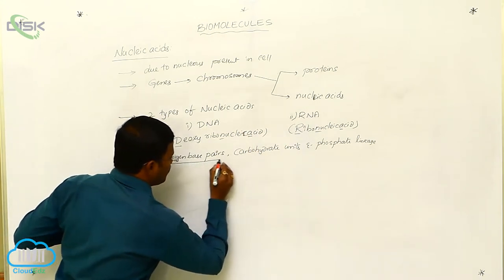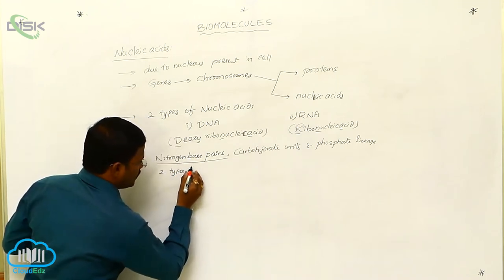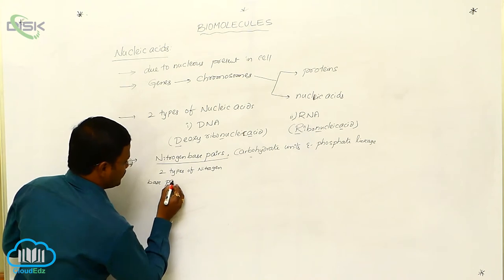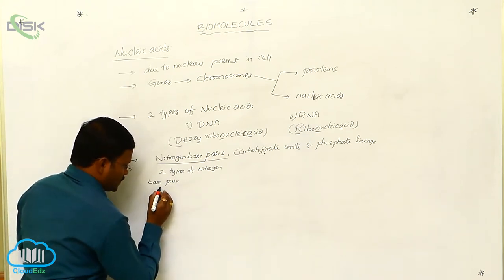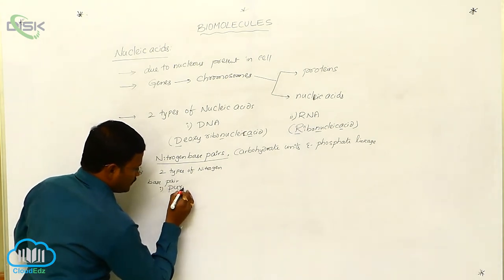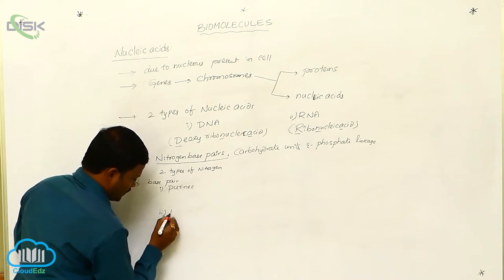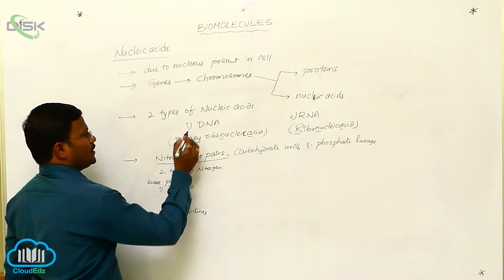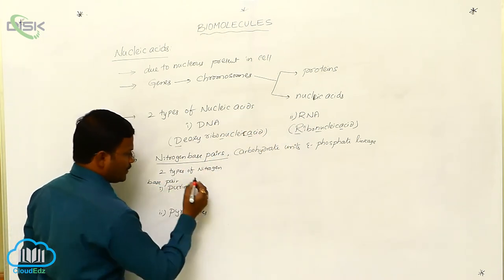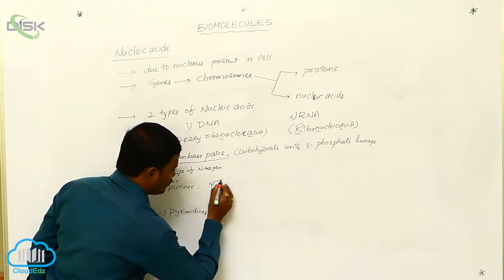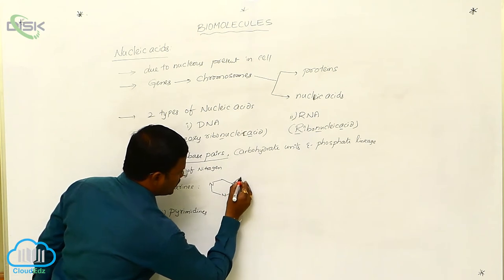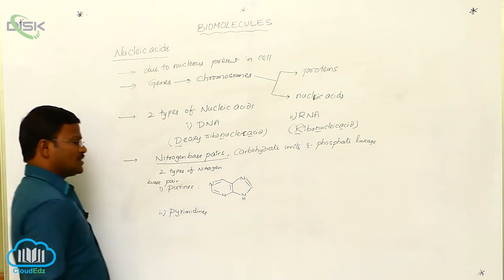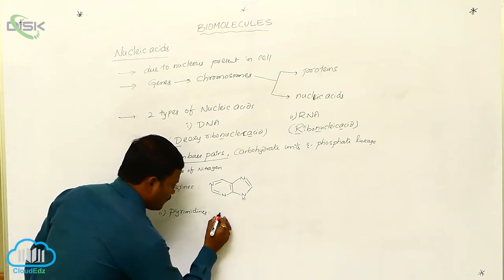There are two types of nitrogen base pairs present in nucleic acids. The first type is purines and the second type is pyrimidines. The general structure of purines has the geometry represented as a bicyclic ring system.